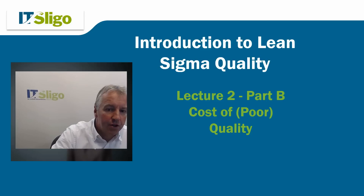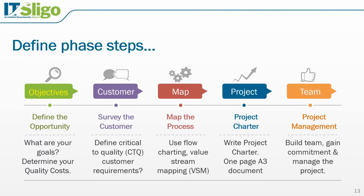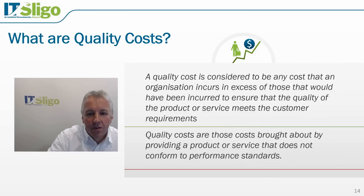Welcome to lecture two part B. We're going to look at the cost of poor quality and the classification of quality costs. We're in the Define phase, and we've talked about our goals. Now we're going to determine our quality costs because we have to understand what the financial saving is to the business and what the value is to the customer. This is getting away from opinion and getting to the facts.